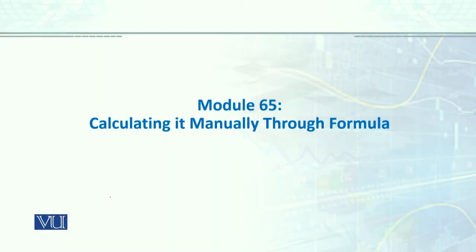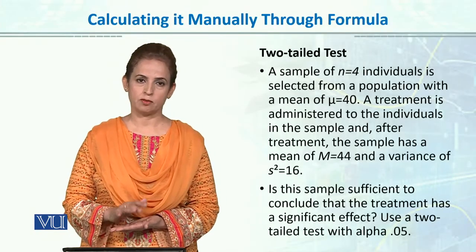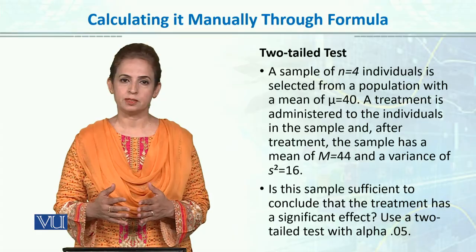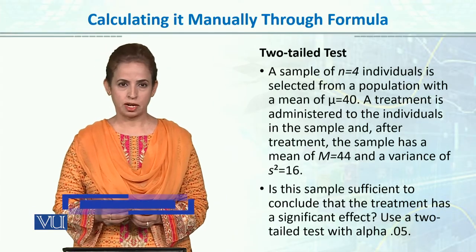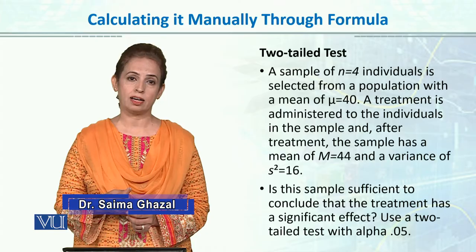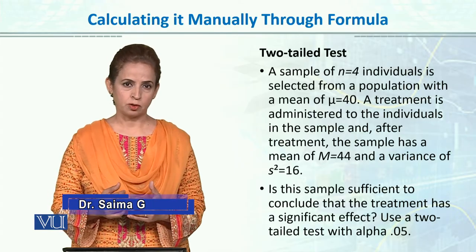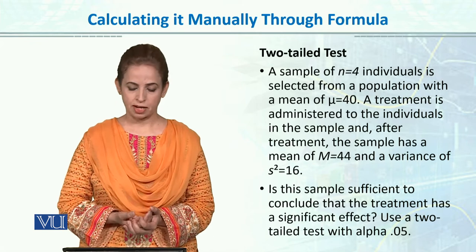Let's calculate manually how we calculate t-statistics, and how we calculate the value and draw conclusions using t-statistics. We will do one example of the two-tail test and one for the one-tail test. We will solve these manually to keep the concept of what t-statistics is and how we are comparing one group, doing the estimation, and how we are doing the calculation.